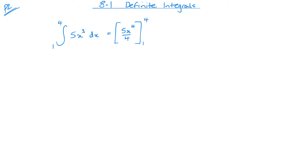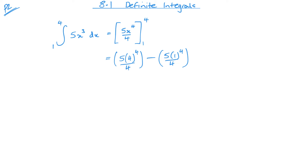You will get marked down if you're not doing this in the exam. You need to make sure that you're using squared brackets. Then we substitute our values in. This becomes 5 times 4 to the power of 4 over 4, minus 5 times 1 to the power of 4 over 4. Working these out gives 320 minus 5 over 4, which is 318.75.